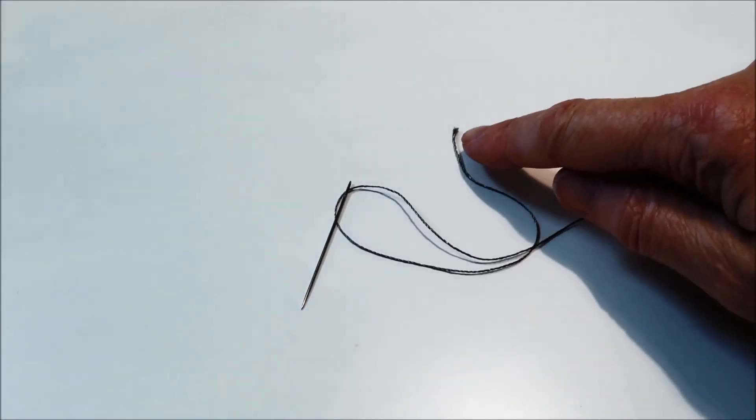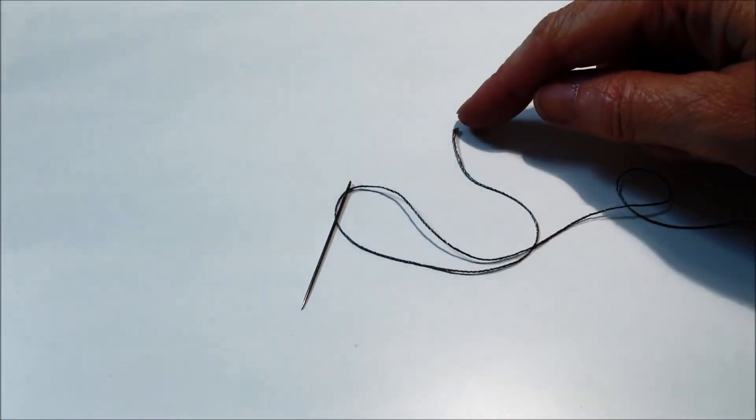If you don't succeed in threading your needle on the first go, because you've handled the end of the thread, it will start to fray. So just clip that off with your scissors and try again. Just remember that all the cuttings when you do this clipping, do that over a bin. You don't want your table to be covered in lots of bits of conductive thread, because that could short your circuit out later on.